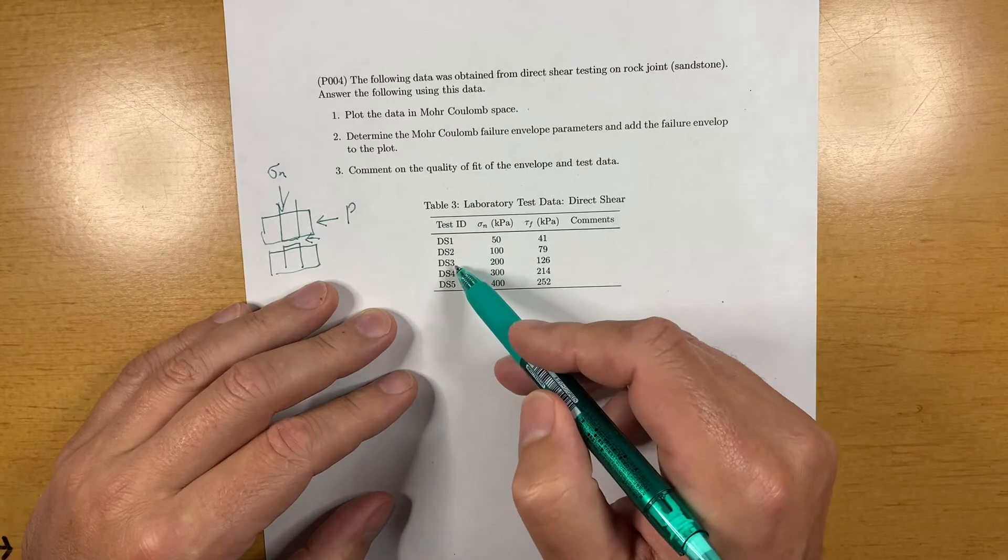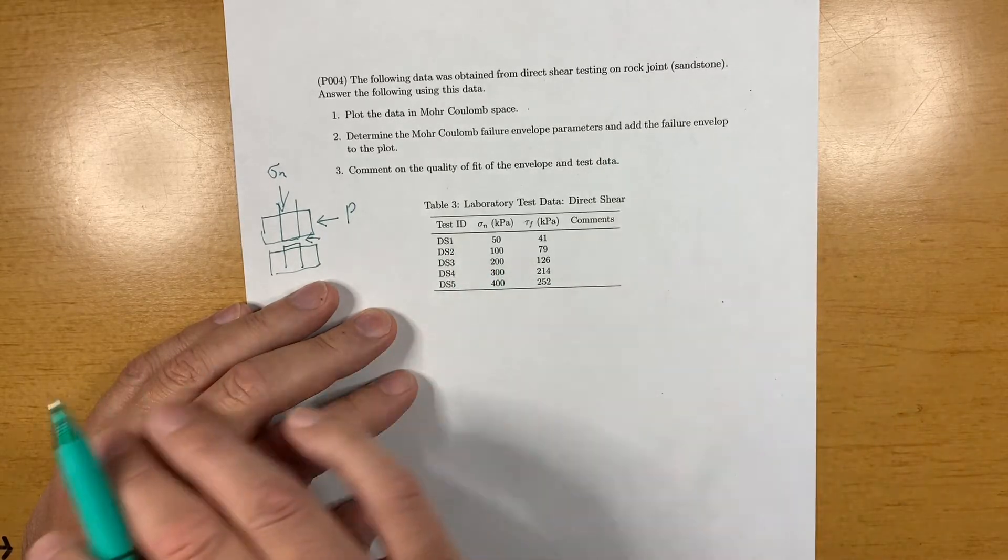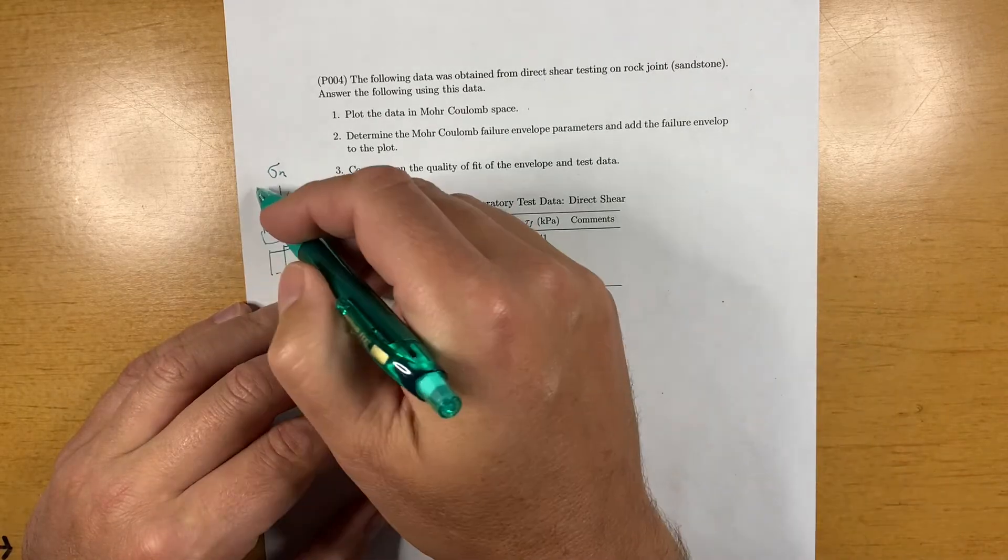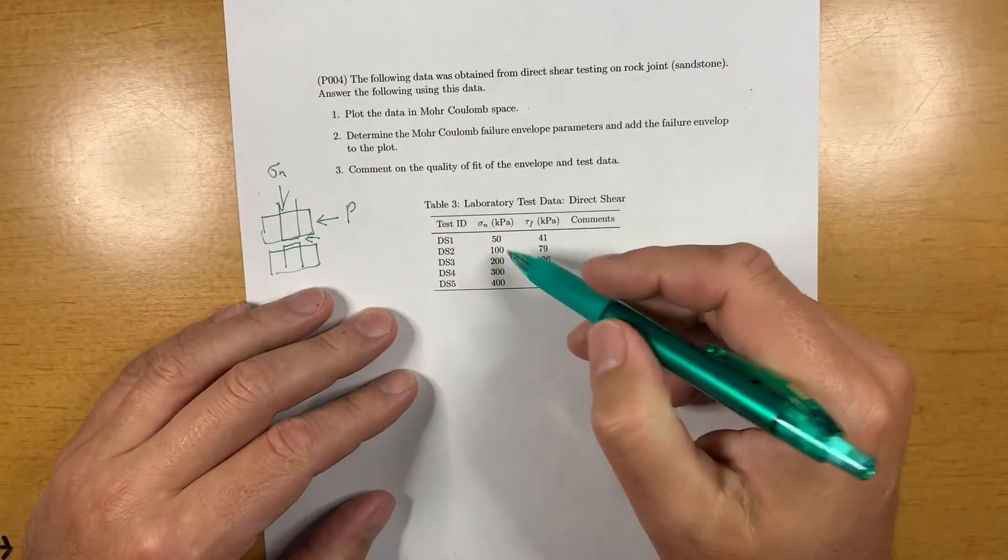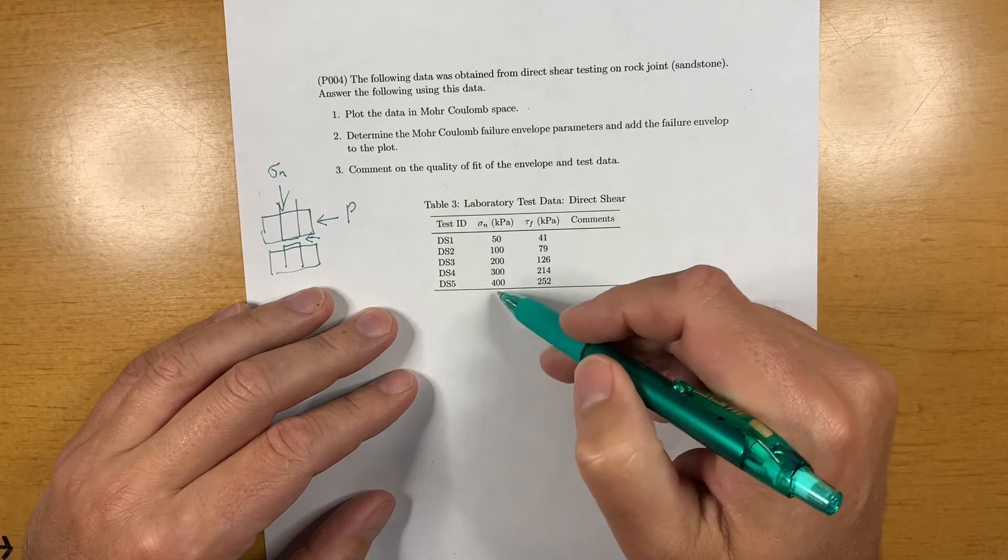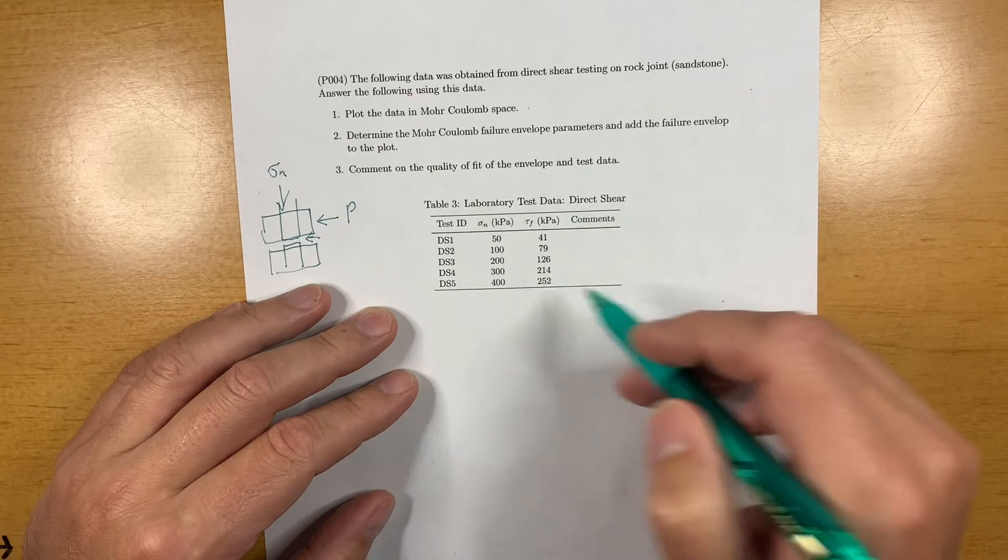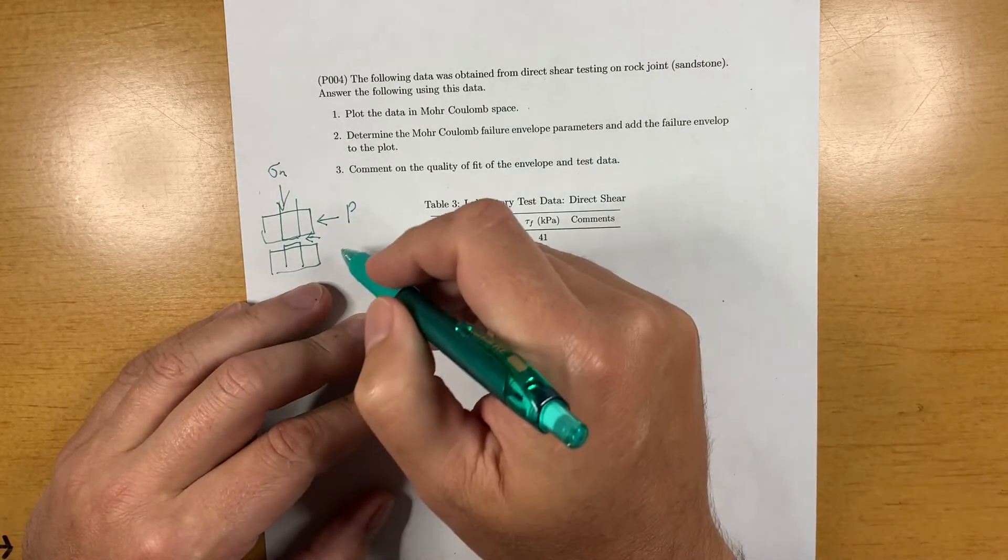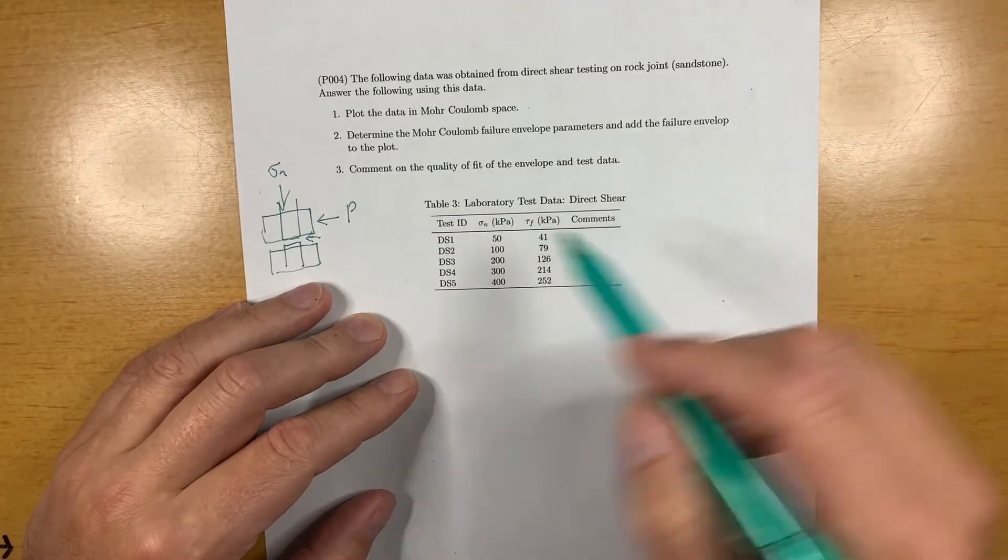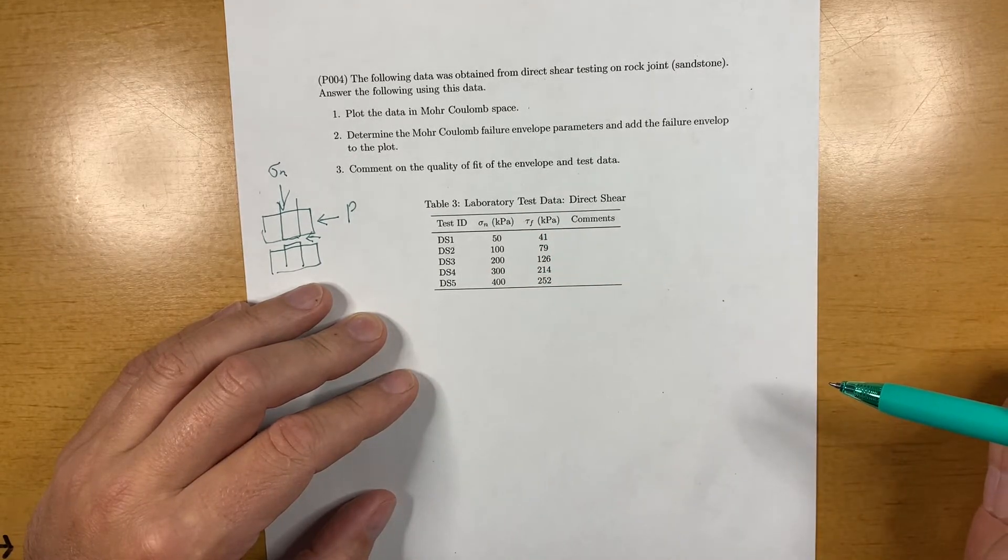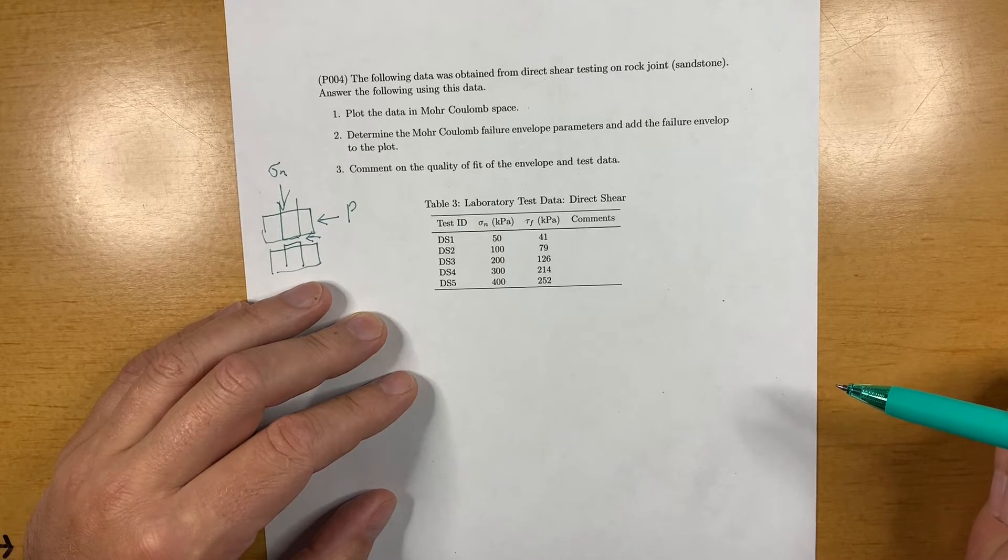We have five direct shear tests at a range of normal stresses. The stress is acting on the failure plane from 50 to 400 kPa. And then we have the shear stress that induces failure. So the force is turned into a stress to give us a shear stress at failure.